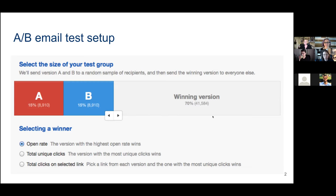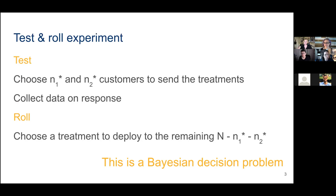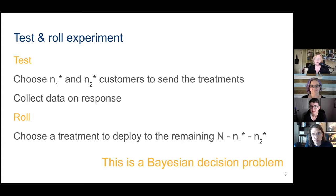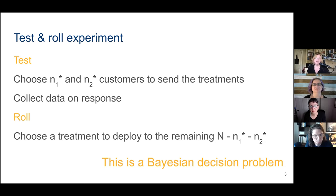The question is: how should I set that slider? What exactly should the number of people be that I send to A and B? The problem is to choose N1-star and N2-star — the test sizes. Then we collect data on the response and roll, meaning we choose a treatment to deploy to the remaining capital-N minus N1 minus N2. For our purposes, let's imagine there is a total expected amount of traffic or email addresses.